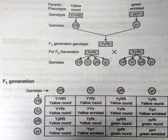To summarize the dihybrid cross: let capital Y determine yellow color of the seed, then its recessive allele small y should be responsible for green color of the seed. Similarly, capital R will determine round shape and small r will determine wrinkled seeds. Therefore, the genotype of the parental true breeding plant with yellow round seeds will be YYRR, and that of a plant bearing green wrinkled seeds will be yyrr.